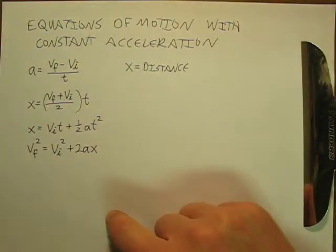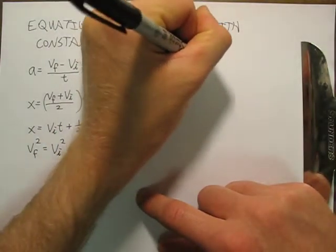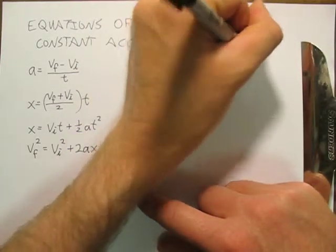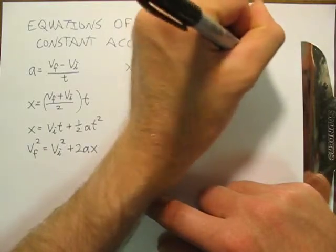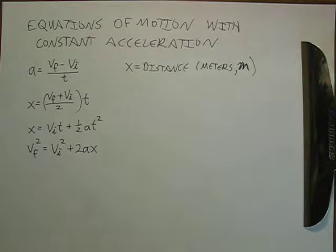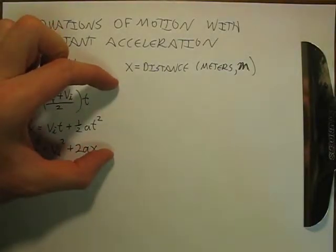And what unit do we use to measure distance with? Well, we use meters, which is m. And we talked in Chapter 1 about what a meter is. So basically, distance, we should all have a good concept of distance. My fingers are some distance apart. Two towns are some distance apart.